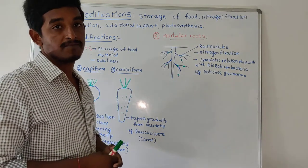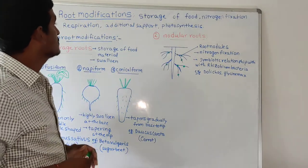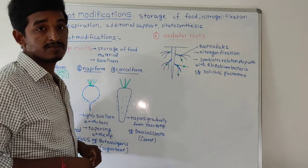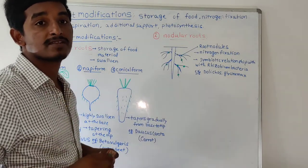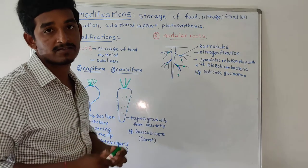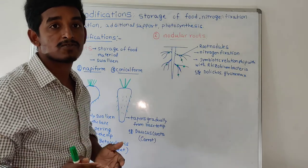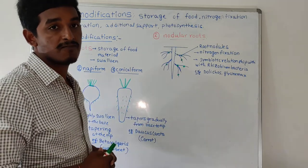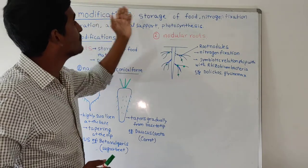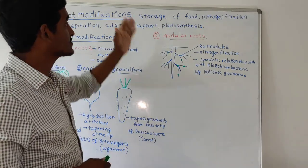It also helps to prevent soil erosion and provides support to other parts of the plant. Those are the common functions of root. In this lecture we are going to discuss about root modifications. Why is the root modified? What is the need for modification? Modification is nothing but a permanent change that takes place in root to perform special functions, not normal functions.